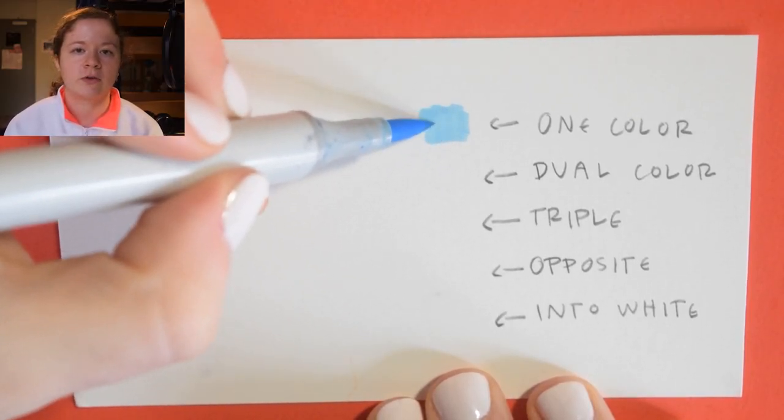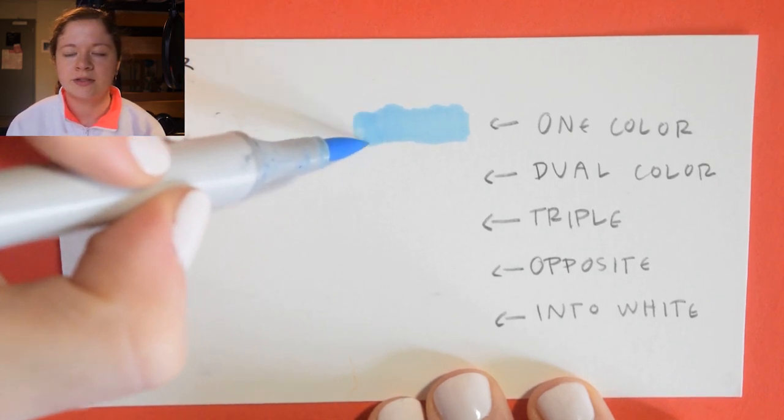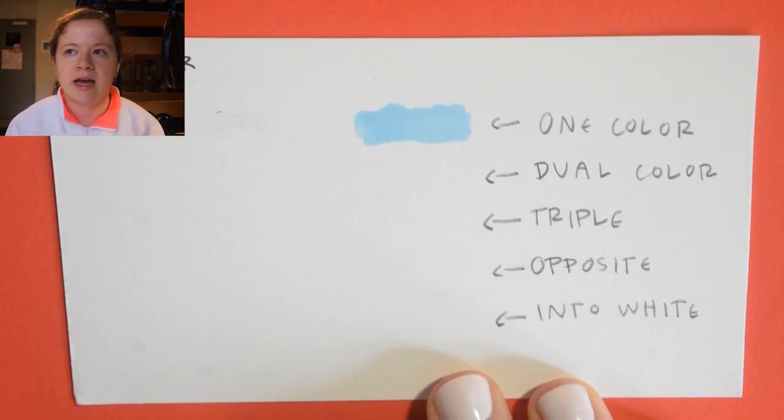If you want to shade it with one color, this usually happens if you don't have a darker color of your base coat or if you're just looking for a really subtle shadow. First, you want to place your base color and then let it dry.